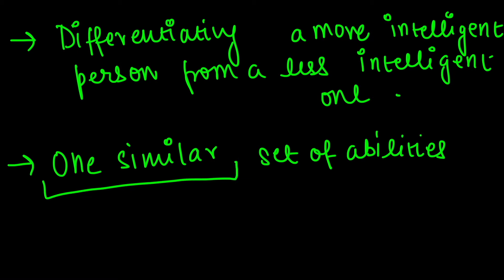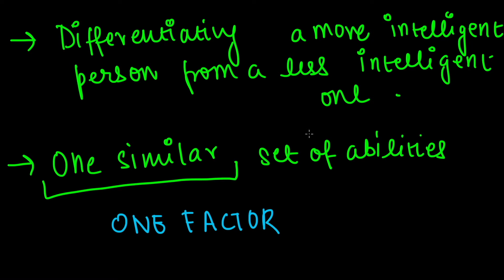Because Binet focused on this one similar set of abilities, his theory is referred to as the one-factor theory of intelligence. Now let's look at this theory with the help of an illustration to make it a bit more interesting.